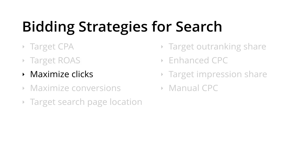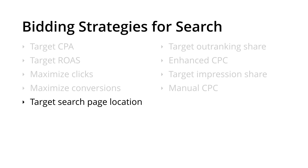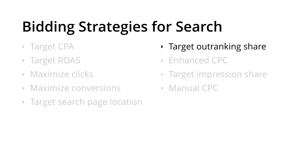We then have Maximize Clicks, which will try and achieve the maximum number of clicks possible within your daily spend amount. Next is Maximize Conversions, which uses conversion tracking and automatically adjusts bids to gain as many conversions as possible within our daily budget. Then there is Target Search Page Location, which aims to reach the top of the paid results when people are searching on Google. Then there is Target Outranking Share, which is ideal if you have a particular competitor you'd like to appear above. You enter the competitor's domain name and the system automates your bidding so you outrank them in Google's paid results.